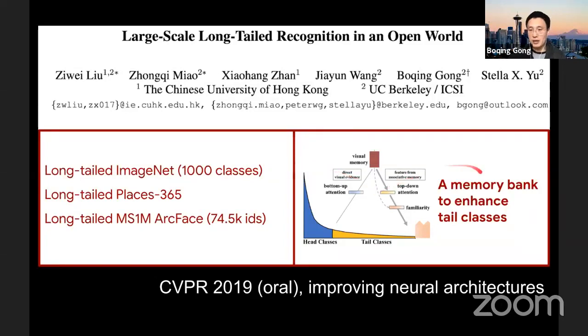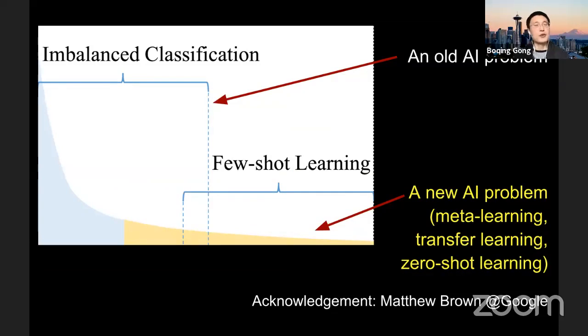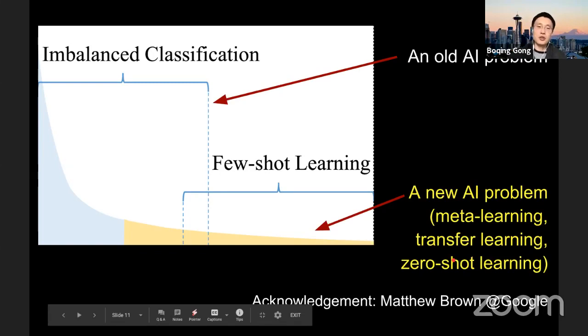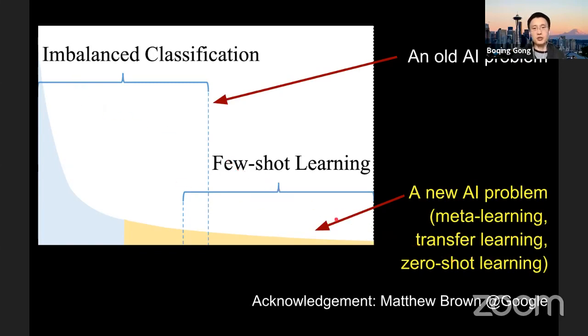Also, we got a, I think, straightforward neural architecture at that moment, which is to use the memory bank to enhance the tailed classes. So we got good results. And then I joined Google. We started to kind of like argue with one of my great colleagues, Matthew Brown, regarding what's the difference between this long tailed recognition and the traditional imbalanced classification.